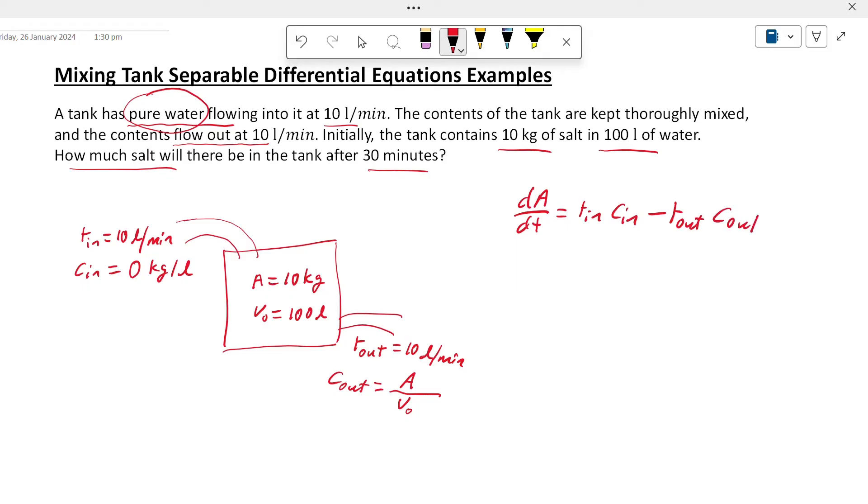minus R_out C_out. So R_in is 10 liters per minute, concentration of salt is 0, minus the flow rate is 10 and C_out is 10 divided by the volume, which is 100 liters.